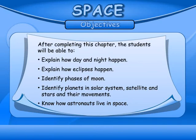Space Objectives. After completing this chapter, the students will be able to: explain how day and night happen, explain how eclipses happen, identify phases of the Moon, identify planets in the solar system, understand satellites and stars and their movements, and know how astronauts live in space.